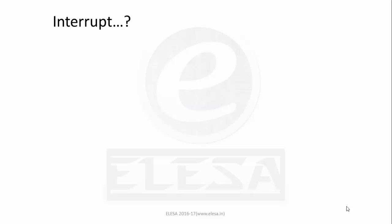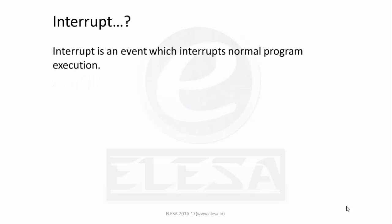If I ask what do you mean by an interrupt, then an interrupt is an event which interrupts the normal program execution. In simple words, if you are playing a game on a mobile and at the same time a call is coming, then what happens: first the game is paused and then the call is served. That means here the game is your normal program which is interrupted by the call — that is the interrupt.